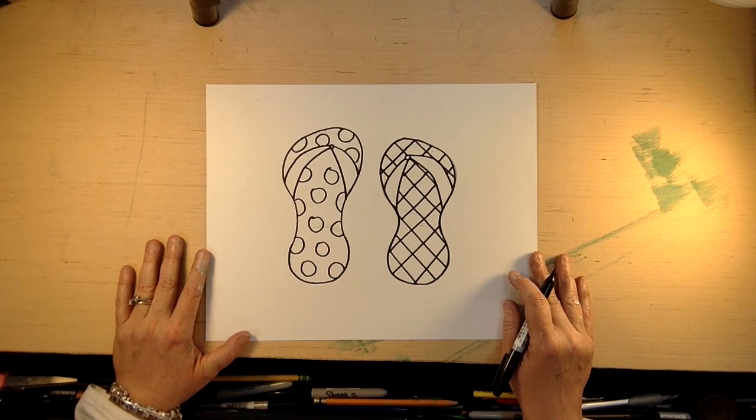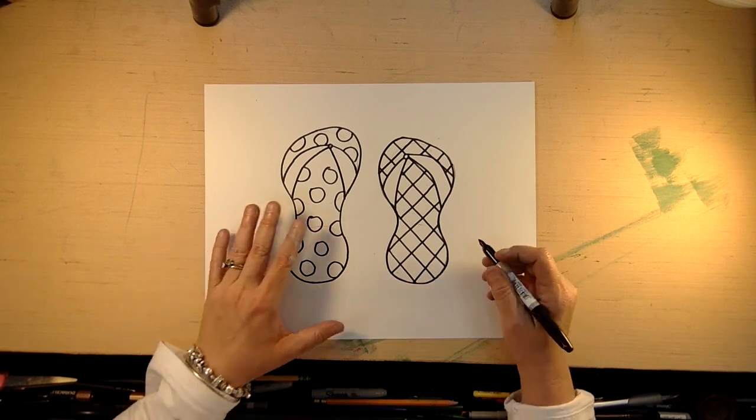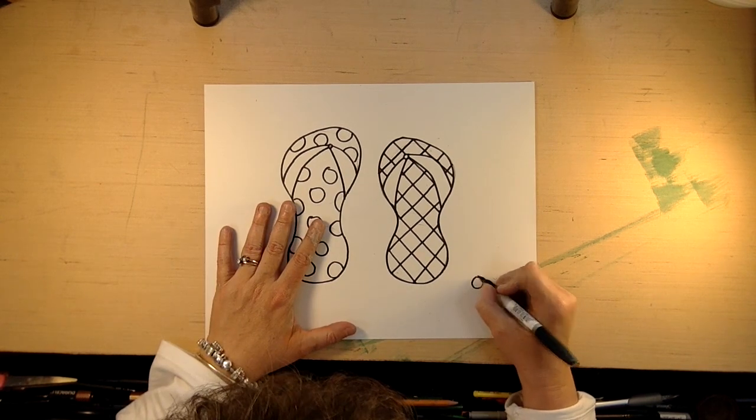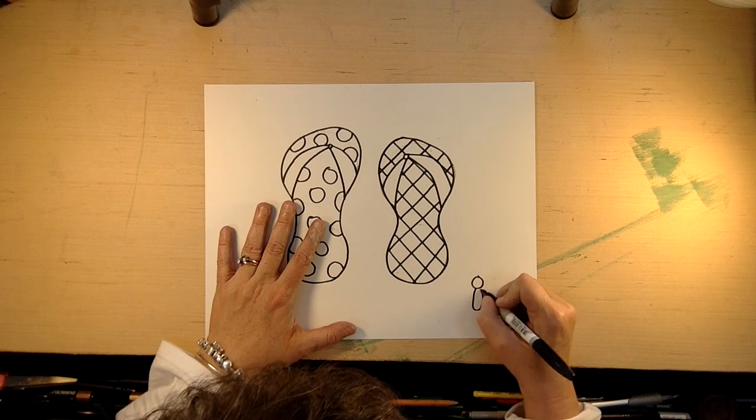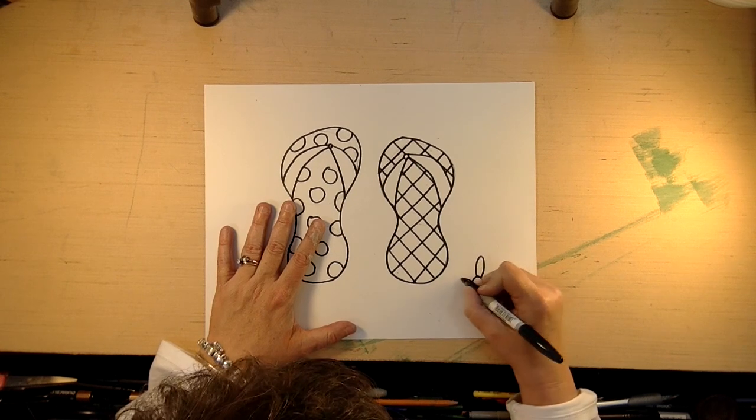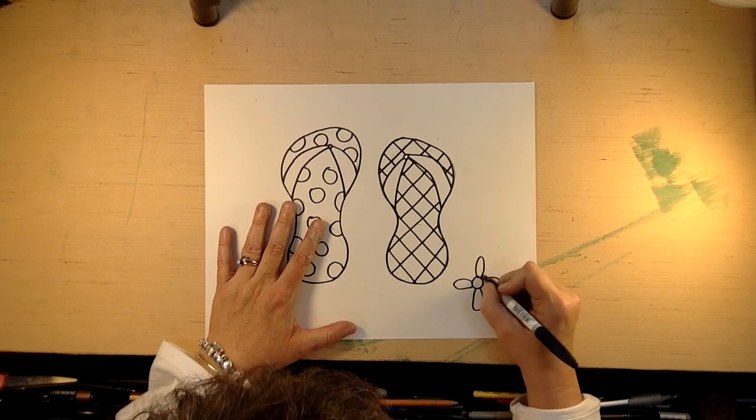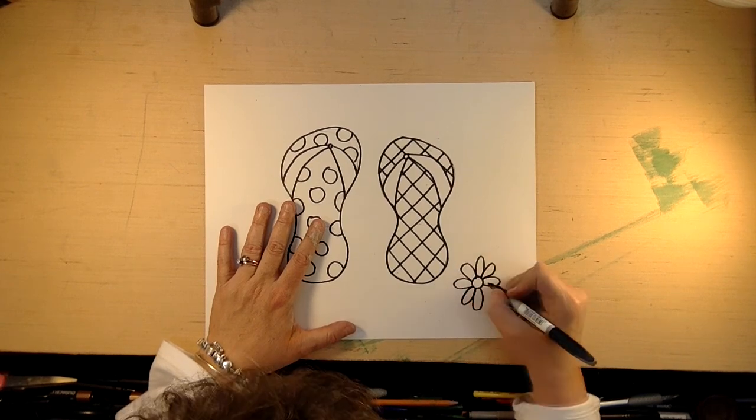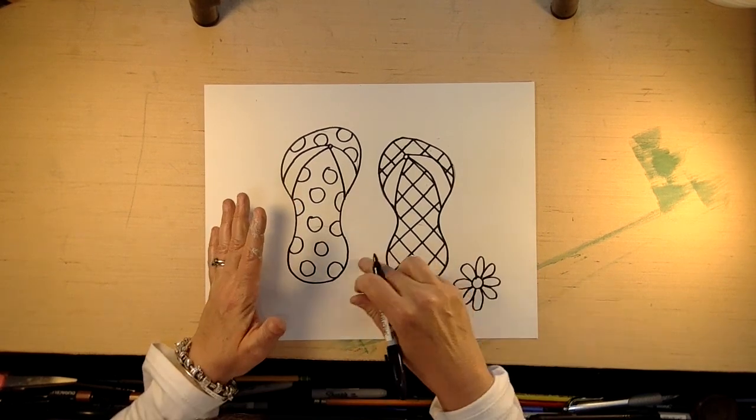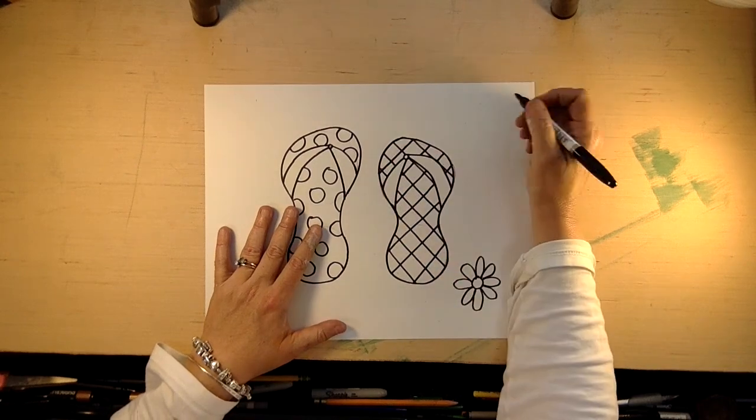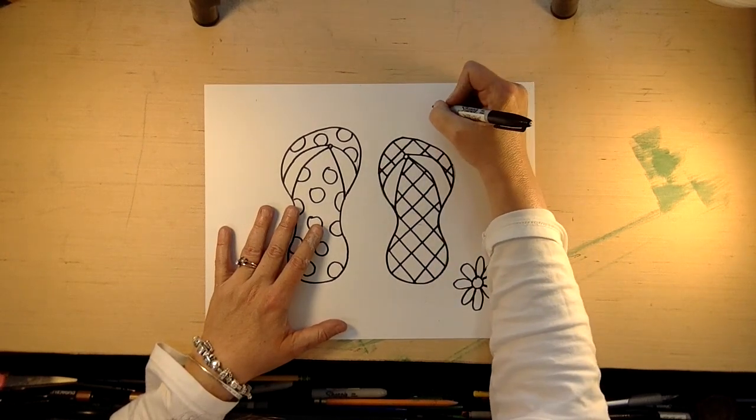And if you want to, everybody always asks like how we drew our flowers. You can draw a flower with this. You can draw a couple flowers. Remember we drew a beach umbrella.